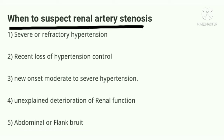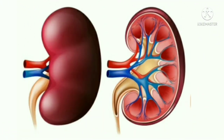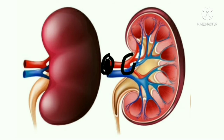The fifth condition is an abdominal or flank bruit. When a patient gives a history of bruit in the abdomen, or while examining the patient we find a bruit in the abdomen or flank region, we have to suspect renal artery stenosis. This picture shows a cut section of the kidney showing the renal artery and renal vein. The proximal part of the renal artery is usually involved in atherosclerosis, and the distal part is usually involved in fibromuscular dysplasia in younger patients.